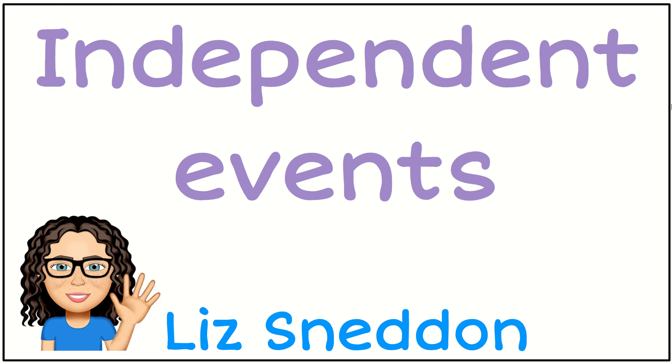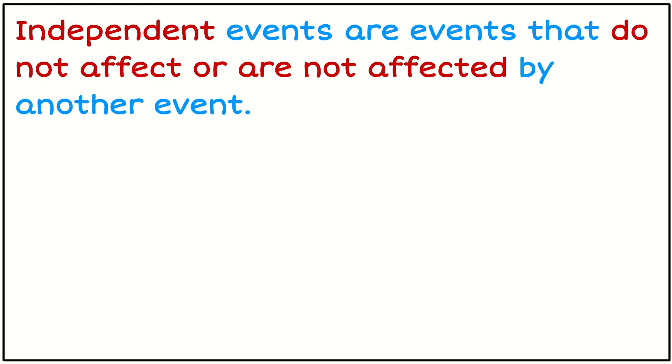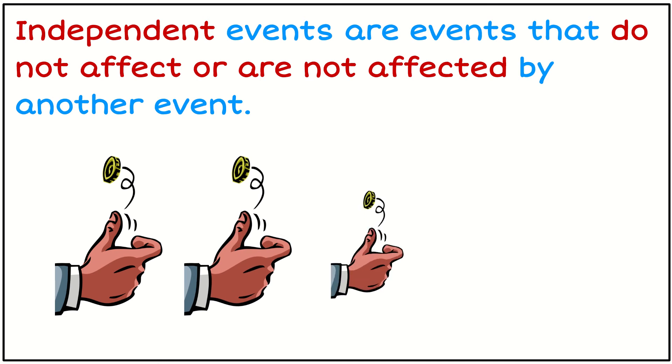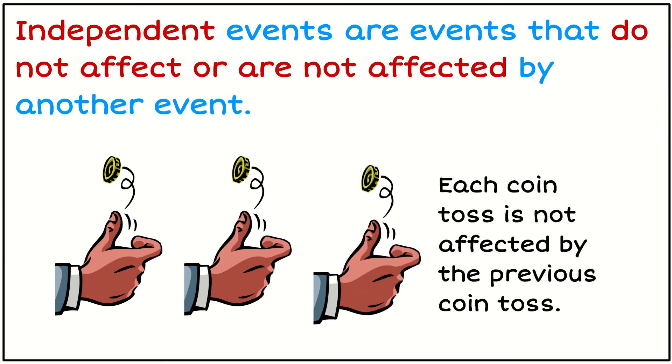Hi, it's Liz Nedden. Let's have a look at independent events. So independent events are things that do not affect or are affected by another event. So if I'm tossing a coin multiple times, then each time I toss the coin it's not affected by the result I got in the previous toss. Okay, so that's what it means to be independent.